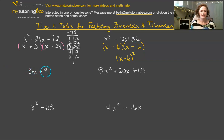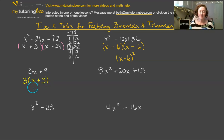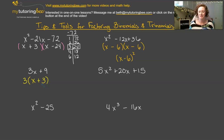Next is 3x plus 9. Can I factor out anything from both terms? I can factor out a 3. So we write 3 times the quantity x plus 3. Can I factor this any further? I don't have an x squared term and there's nothing else I can divide out from both terms, so I think this is it for this one.